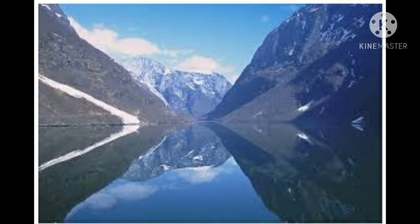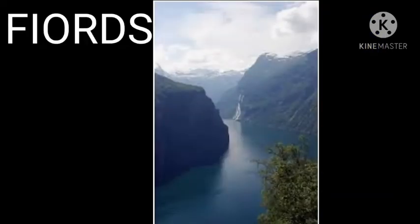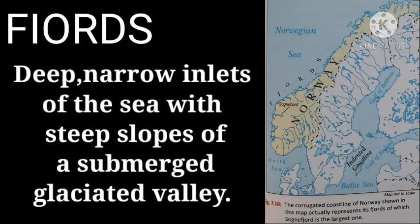These deep inlets or arms of the sea are submerged glaciated valleys with steep slopes on either sides. This unique landform is named as fjords. Fjords are common in the country of Norway. We can say fjords are deep narrow inlets of the sea with steep slopes of a submerged glaciated valley.